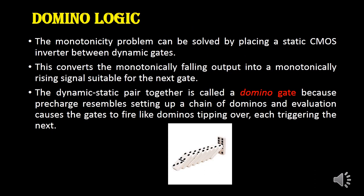To overcome the monotonicity problem, we use domino logic. Just like in the domino game — where triggering one domino causes it to hit the others in sequence — the same concept is used in domino logic circuits. Between the dynamic gates, an inverter is inserted so that the monotonicity problem can be overcome.